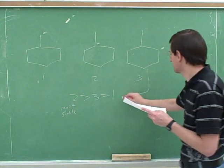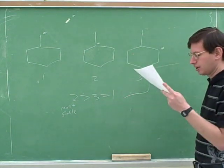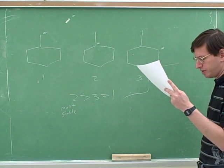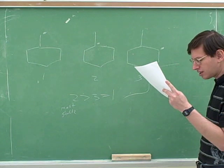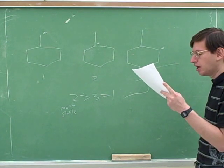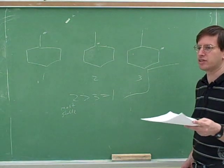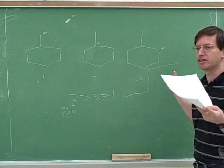How about question three? Trigonal planar. Yeah, so the question was, what is the geometry of the central carbon of a tertiary-butyl radical? The geometry of the central carbon of a tertiary-butyl radical. But we don't even have to bother drawing what the tertiary-butyl radical looks like because we've just learned that the geometry of a radical is trigonal planar.